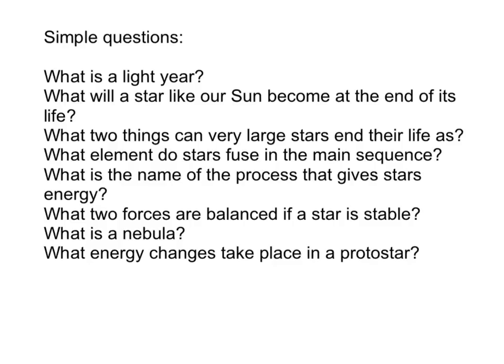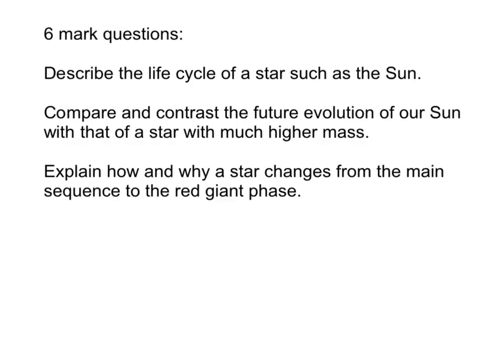Now you need to pick three simple questions to answer: What is a light year? What will a star like our Sun become at the end of its life? What two things can very large stars end their life as? What element do stars fuse in the main sequence? What is the name of the process that gives stars energy? What two forces are balanced if a star is stable? What is a nebula? What energy changes take place in a protostar? For the six-mark questions — in order of difficulty — describe the life cycle of a star such as the Sun. For A and A-star grades, compare and contrast the future evolution of our Sun with that of a star with much higher mass, and explain how and why a star changes from the main sequence to the red giant phase.